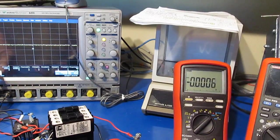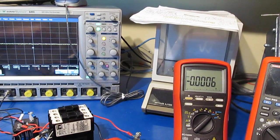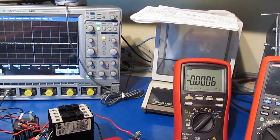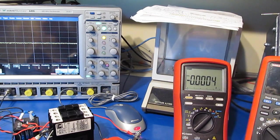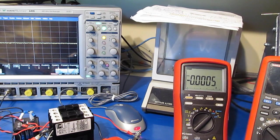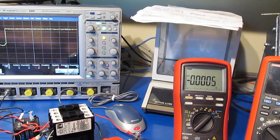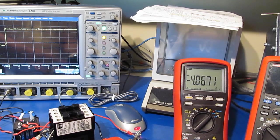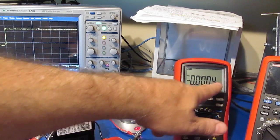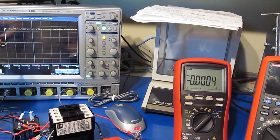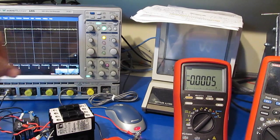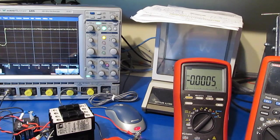So the scope is currently set for two volts per division. Alright let's just see what we get here. You can see roughly 4.97 and our oscilloscope is basically two and a half divisions up or roughly five amps.